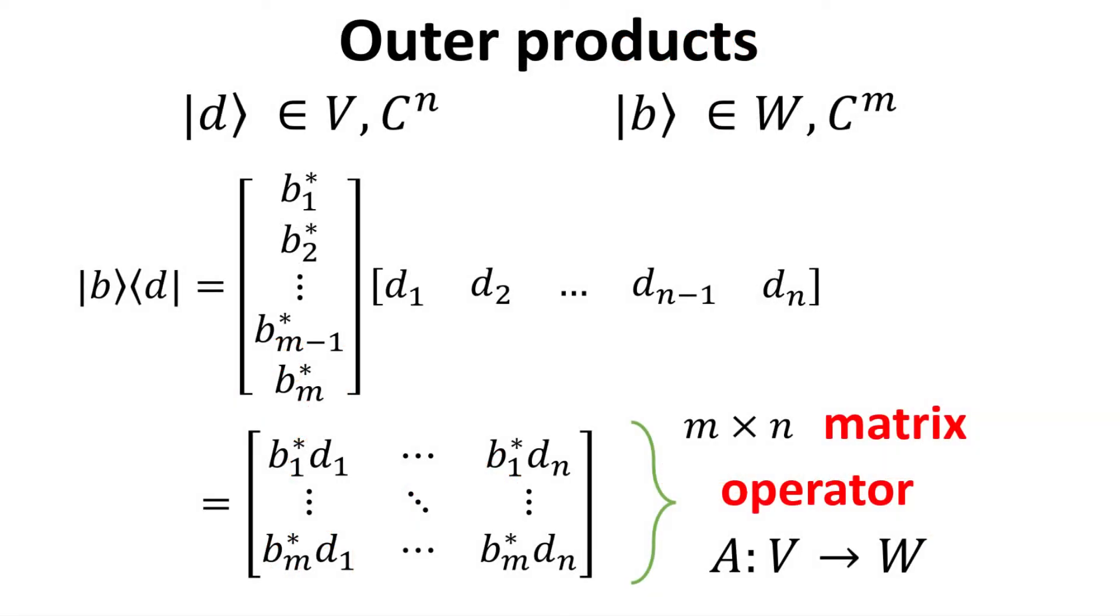Let's consider the d and b ket which lives in the n and m dimensional vector spaces respectively. The outer product b ket multiply with d bra can be written explicitly in terms of their column and row vectors. It is straightforward to see that the outer product is a matrix. Since the b ket lives in a m dimensional vector space, while the bra d lives in a n dimensional vector space, the matrix is of dimension m by n.